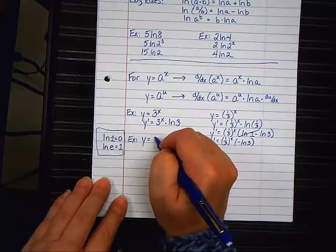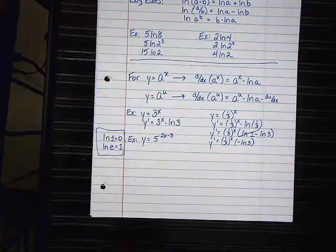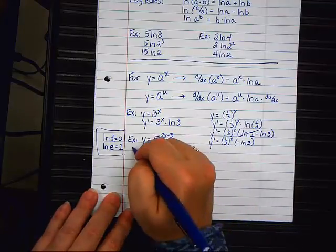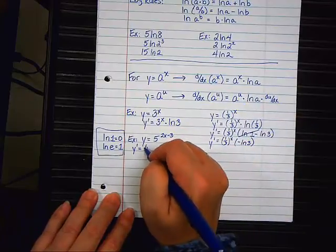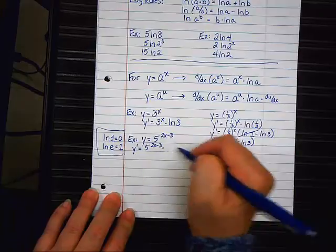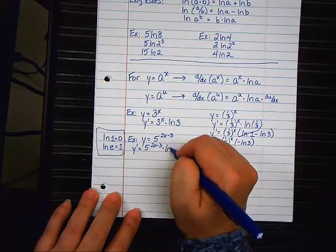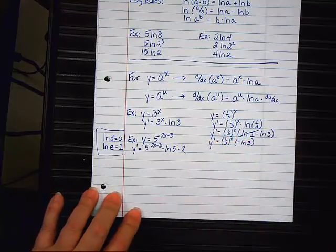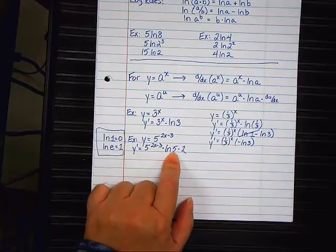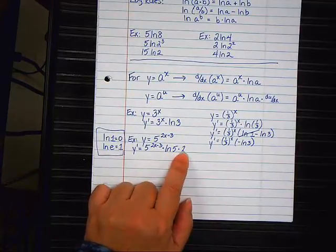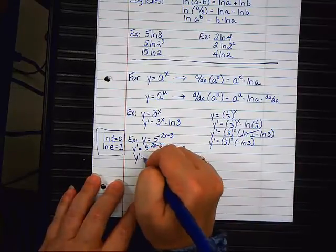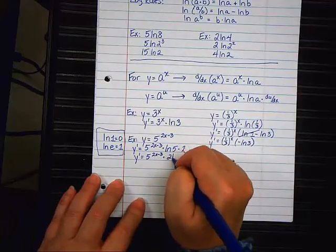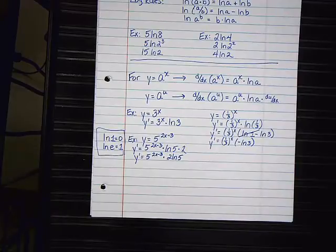Next one. y equals five to the two x minus three power. Now, my exponent is more than just an x. So, y prime equals. Step one. Copy, paste. Five to the two x minus three. Times. The natural log of what? Five. Times. Two. Where'd you get the two again? The exponent's derivative. The natural log of five. Can you break that down? No. That's done. But this two can go in front of it. So, y prime equals five to the two x minus three times two natural log of five. And that's the answer. So far, so good. One more and I'm done.